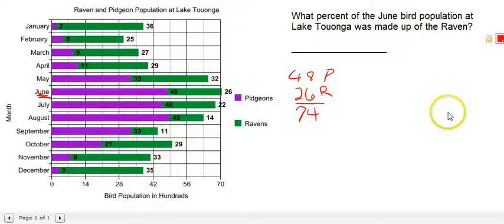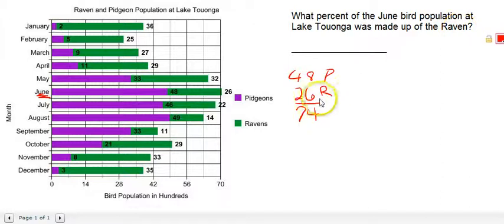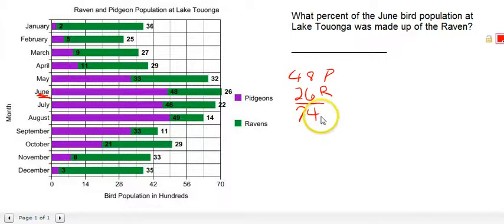Adding them gives us 74. The second part of the question is we want to know what percent was made up of the raven. We know how many ravens there were — 26, that's the part. We know the total amount of birds, which is 74 — that's the base.